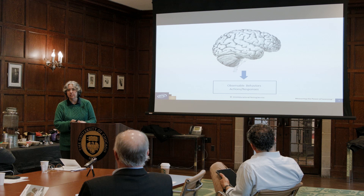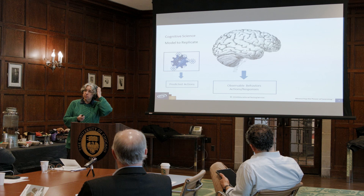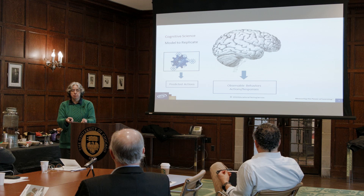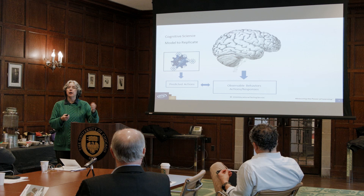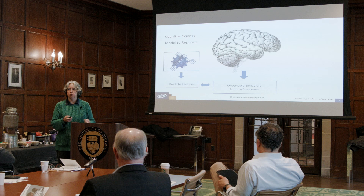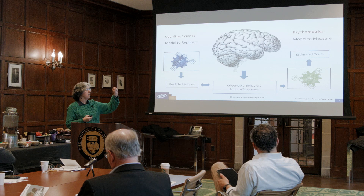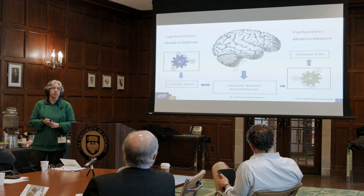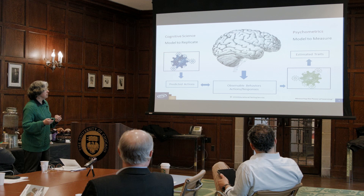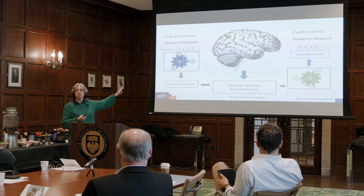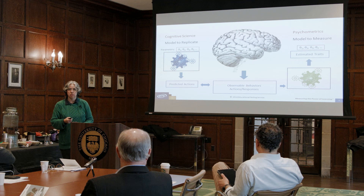Cognitive science is very interested in this question, and they build computational cognitive models to replicate and understand cognitive processes. These models predict actions given a particular task, and then they can give humans the same task, compare the results, and update their models — trying to best understand their theories of cognition. In psychometrics, we also use models, but we go from the other direction: we start with observable behaviors, the item responses, feed them into our models, and make estimates about latent traits of interest. My research agenda is asking: can we take the latent traits we're interested in measuring, cast them in terms of parameters of computational cognitive models, and therefore use those models for psychometrics?